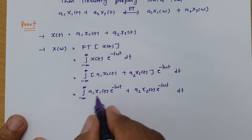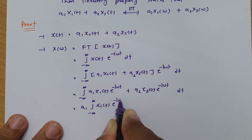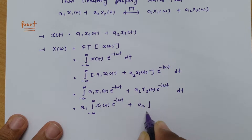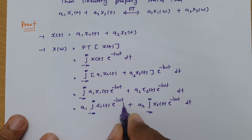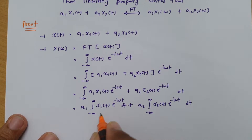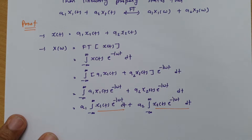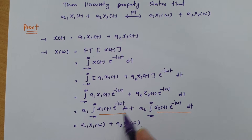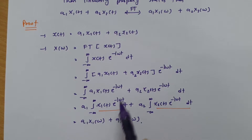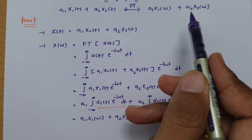Since a1 and a2 are constants, we take them outside: a1·∫x1(t)·e^(−jωt) dt + a2·∫x2(t)·e^(−jωt) dt. Observing these terms, the first integral is the Fourier transform of x1(t), which is X1(ω), and the second is X2(ω). So this becomes a1·X1(ω) + a2·X2(ω), completing the proof of the linearity property.